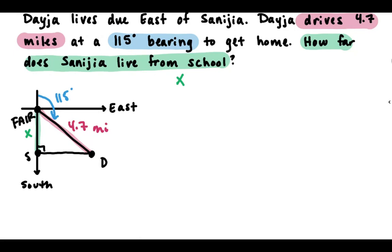We're going to use linear pairs on this angle and this angle. We know those add to 180, which means the inside angle would be 65 degrees — since 65 and 115 add to 180.